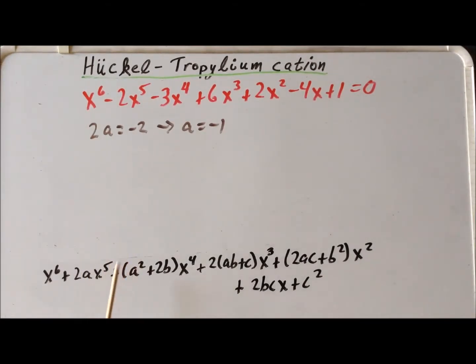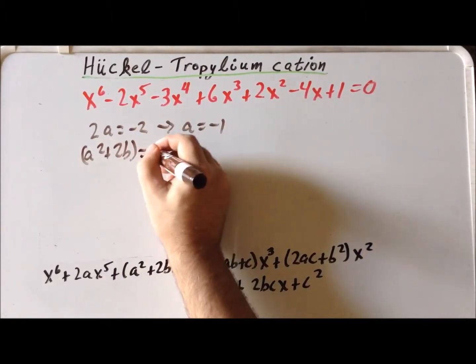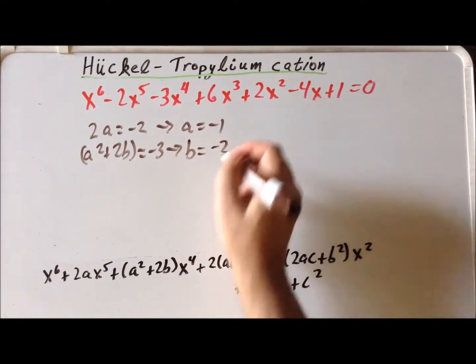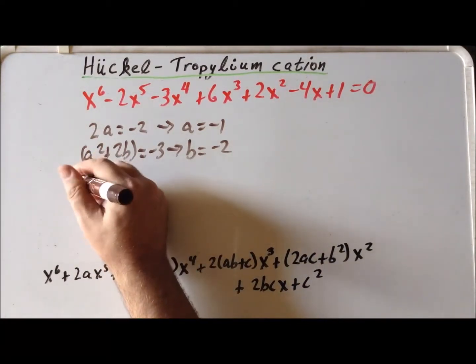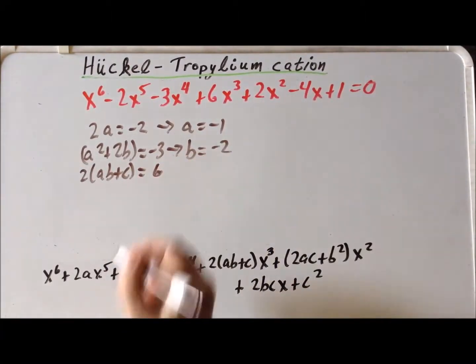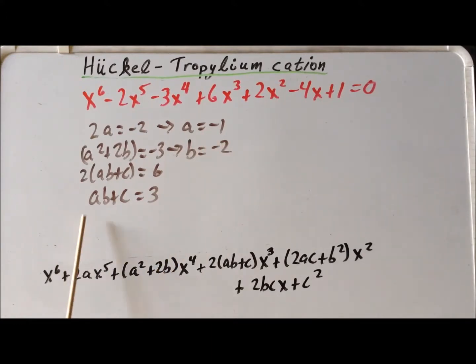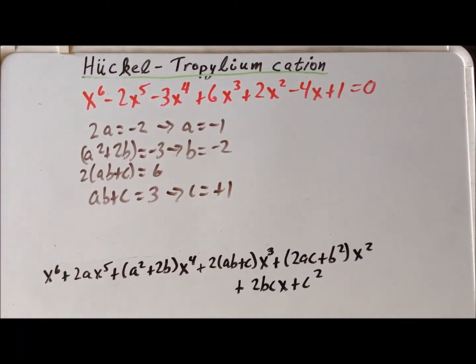Now for x to the fourth power, we have a squared plus 2b is equal to minus 3. Now we already know that a is equal to minus 1, so a squared is equal to a positive 1. So that tells us directly by simple algebra that b has to be equal to minus 2. Continuing to the x to the cube term, we have 2 times ab plus c, and we see that it's equal to a positive 6, which tells us that ab plus c itself is equal to 3. We know the values of a and b are minus 1 and minus 2. So ab is equal to a positive 2. So immediately we see that c has to be equal to a positive 1.